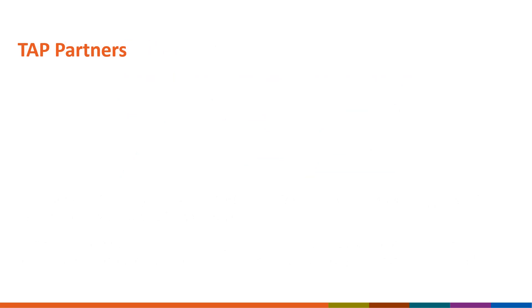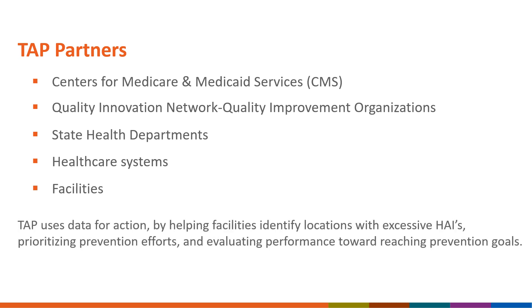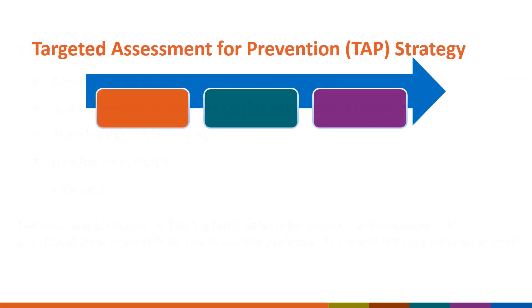Several partners are involved in this strategy, including the Centers for Medicare and Medicaid Services or CMS, Quality Innovation Network Quality Improvement Organizations, State Health Departments, Healthcare Systems, and Facilities. TAP uses data for action by helping facilities identify locations with excessive HAIs, prioritizing prevention efforts, and evaluating performance towards reaching prevention goals. Target, assess, and prevent are the three main objectives of TAP.